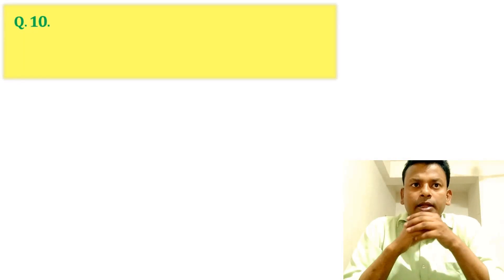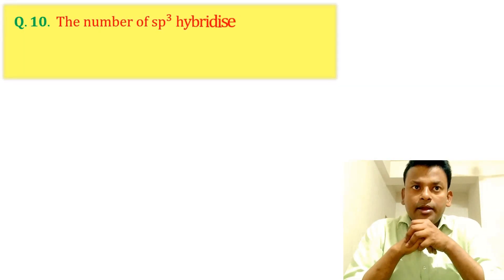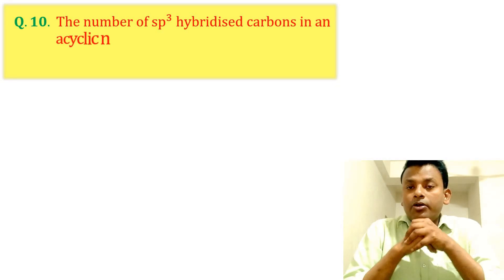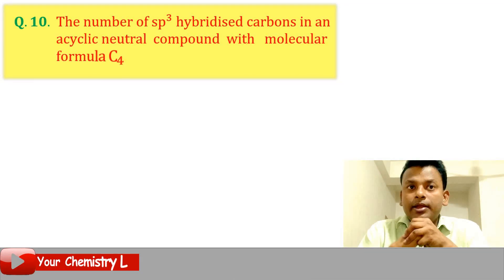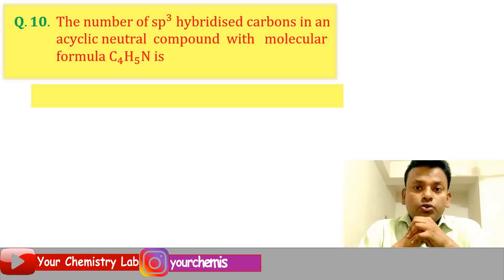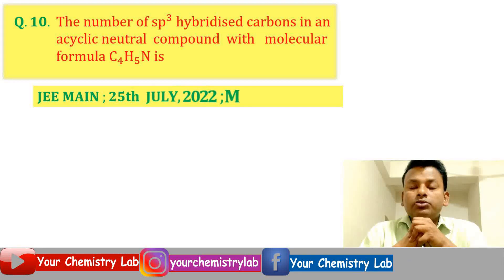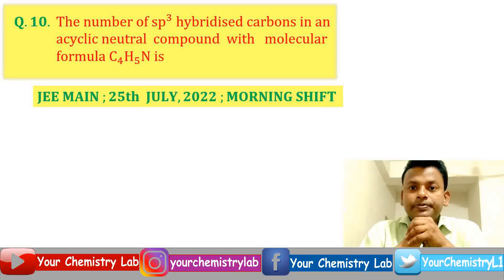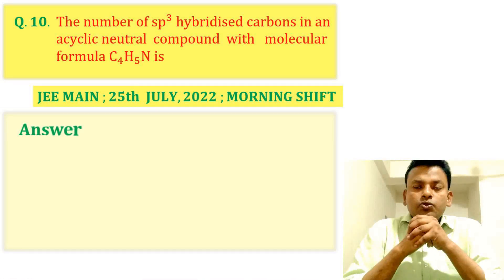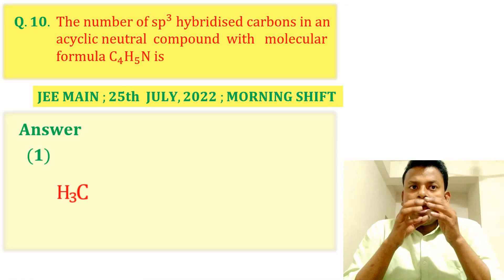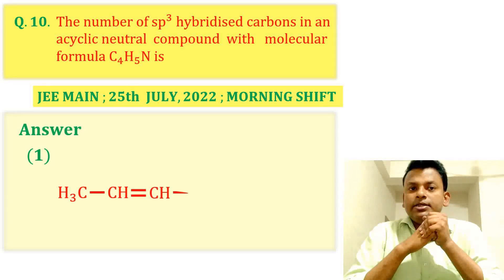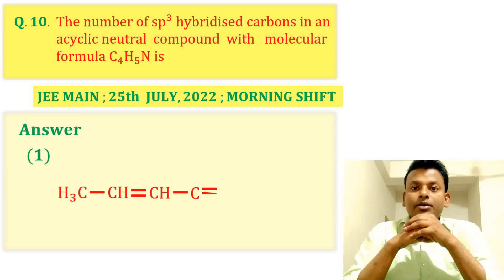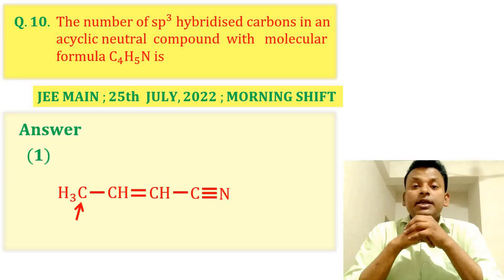Question 10: The number of sp³ hybridized carbons in an acyclic neutral compound with molecular formula C₄H₅N is? This question was set in JEE Main 25th July 2022 Morning Shift. Answer: The answer is 1. The acyclic neutral compound is CH₃–CH=CH–C≡N, and only one carbon is sp³ hybridized.